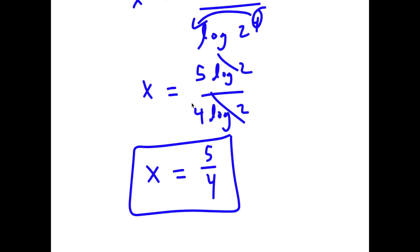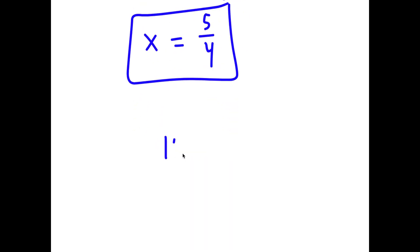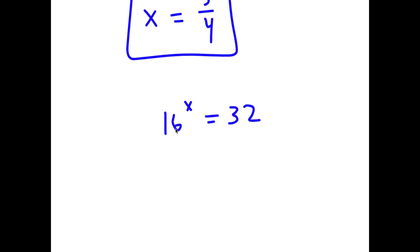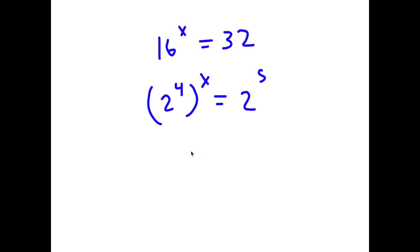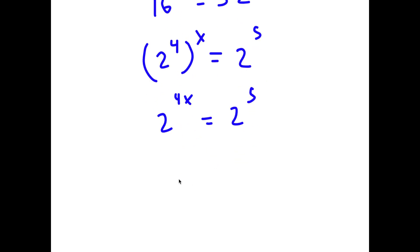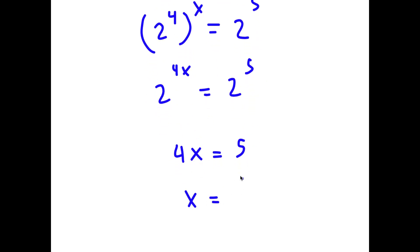For my second method, I have 16 to the power of x equals 32 again. This time I'm going to rewrite 16 as 2 to the power of 4, so I have 2 to the power of 4 to the power of x equals 32, and rewrite 32 as 2 to the power of 5. This gives 2 to the power of 4x equals 2 to the power of 5, meaning 4x equals 5 and x equals 5 over 4. That is my second method.